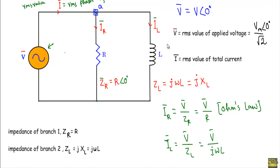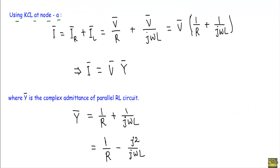At node A, current I is entering and currents IR and IL are outgoing. Applying Kirchhoff's current law at node A, I get total current I equal to IR plus IL. IR equals V over R and IL equals V over jωL. Taking out V, I get I equal to V times (1/R + 1/jωL), so total current I equals V·Y, where Y indicates the admittance of the circuit.